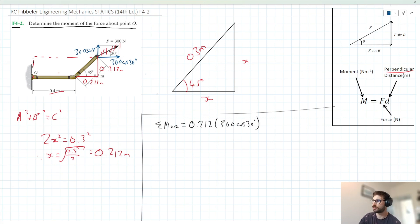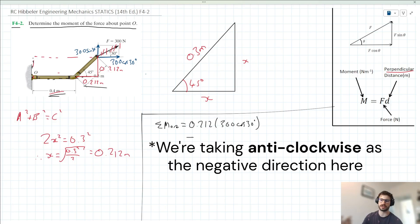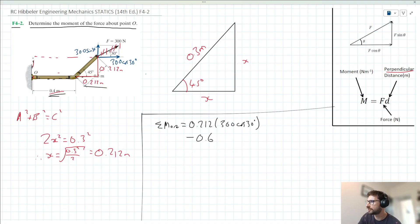Now we want to consider moments acting in the anticlockwise direction, which we have this 300 sin 30 acting here. Now the length here is going to be 0.612 since we're considering both this 0.212 meters and this 0.4 meters here. So we can say minus, since we're taking minus as the negative direction here, we can say minus 0.612 times 300 sin 30 here.